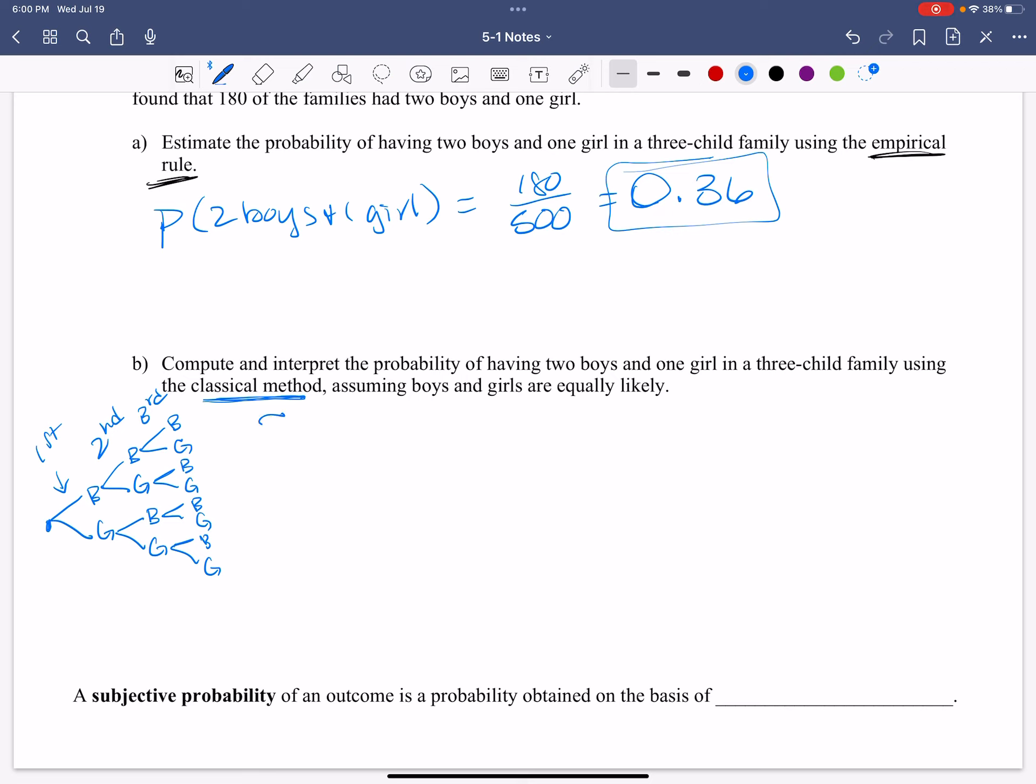So if I want to look at my sample space, we're saying what are my options available? I can have a boy, boy, boy. So the first option, if I have three kids, they could be all boys. My next option could be a boy, a boy, and a girl. So I could have two boys and a girl. My next option could be... Oh, let me change my color up here. Maybe this will help. A boy, a girl, and a boy. Do you see where we're going through with this? A boy, a girl, and a boy.